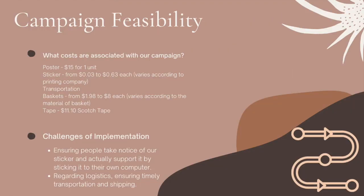Regarding campaign feasibility, we first analyzed the costs associated with our campaign. The costs include printing of posters, printing of laptop stickers, transportation, and the purchase of baskets and tape. For posters, we calculated an average of $15 per unit. For stickers, the cost can range from 3 cents to 63 cents each, varying by printing company, and we will find the cheapest option possible. Transportation costs vary according to volume of purchases. Baskets range from $1.98 to $8 each depending on material. Tape is regular scotch tape at around $11.10, which will be used to stick the posters to the walls.